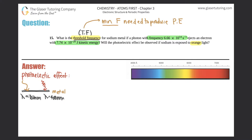One will produce the photoelectric effect and one will not, depending on the threshold frequency. Longer waves with longer wavelengths will not produce the photoelectric effect. The photoelectric effect is when electrons are ejected from the metal — otherwise the light will just bounce back. Higher frequencies, above the threshold, will produce the photoelectric effect, meaning electrons hit the metal and are ejected.